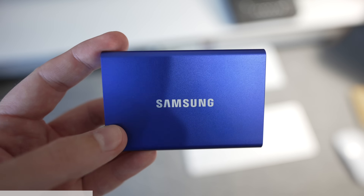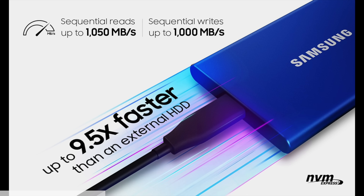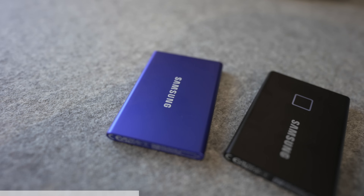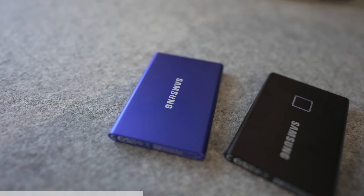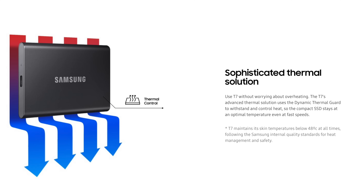The entire T7 range is light and pocket-sized, delivering sequential read-write speeds of up to 1050MBps and 1000MBps respectively, making the T7 almost twice as fast as the previous T5 model. The drives have a sophisticated dynamic thermal guard solution, so no need to worry about them overheating, even if you're really pushing them.